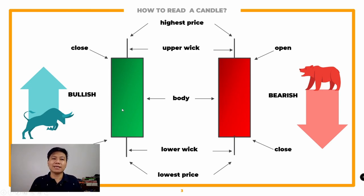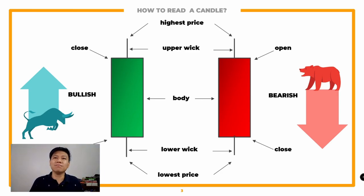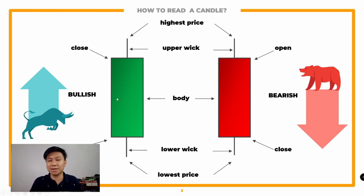If you look at a bullish candlestick, usually ang opening price nasa baba and mag-close yan for a particular time frame sa taas — meaning pataas yung price. Vice versa din: kapag bearish yung candlestick, mag-open yung price sa taas and pag nag-close yan, nasa baba na. Yung highest and lowest price points nagkakaroon ng wick kapag hindi nag-open or nag-close within yung price range. Meron ding candlesticks na wala ring wicks — yung marubozu. May mga doji din na wala halos body, so opening at closing price nasa same area.